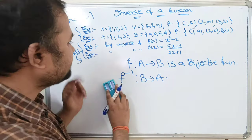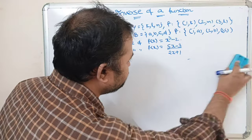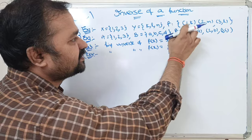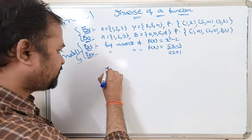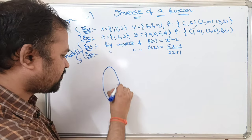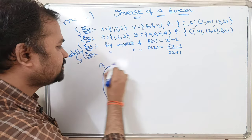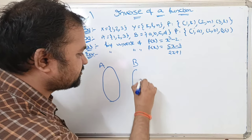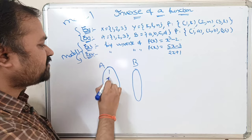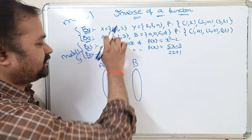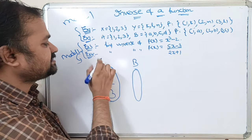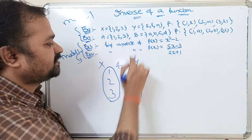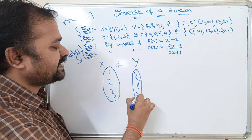Based on this definition we are going to solve the first two examples. Here we have two sets X and Y with a function. Let us see whether it is a bijective function or not. X elements are 1, 2, 3, and Y elements are k, l, m.